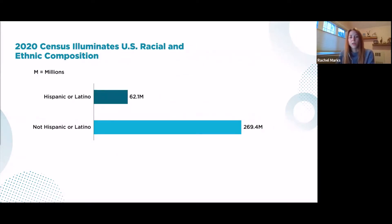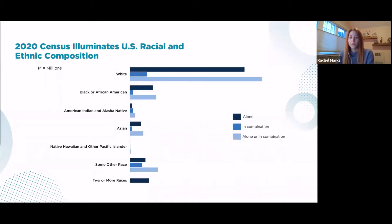The 2020 census illuminates the racial and ethnic composition of the United States. The first component is ethnicity statistics from the question on Hispanic or Latino origin — the Hispanic or Latino population numbered 62.1 million in 2020. The second component covers racial statistics from the separate race question. To frame the discussion on racial composition, we use the concepts of race alone, race in combination, and race alone or in combination. These concepts have been in place since the 2000 census and are central to understanding our country's changing demographics.